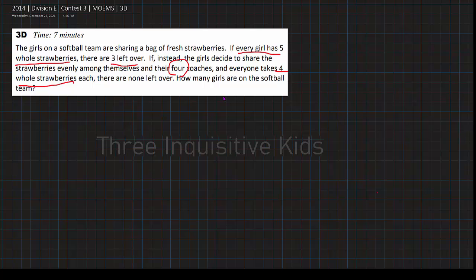To do this problem, we first need to find the equality between these two pieces of information we're given. The equality is what stays the same. If you look closely, each of these are different ways that you could split the strawberries among the people, including the four coaches. But no matter how they split it, the number of fresh strawberries is always the same.